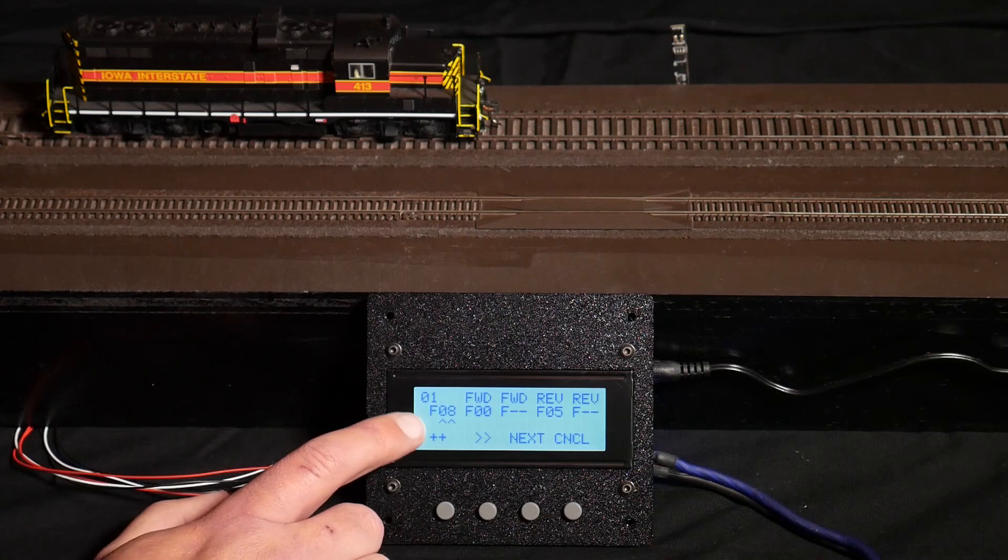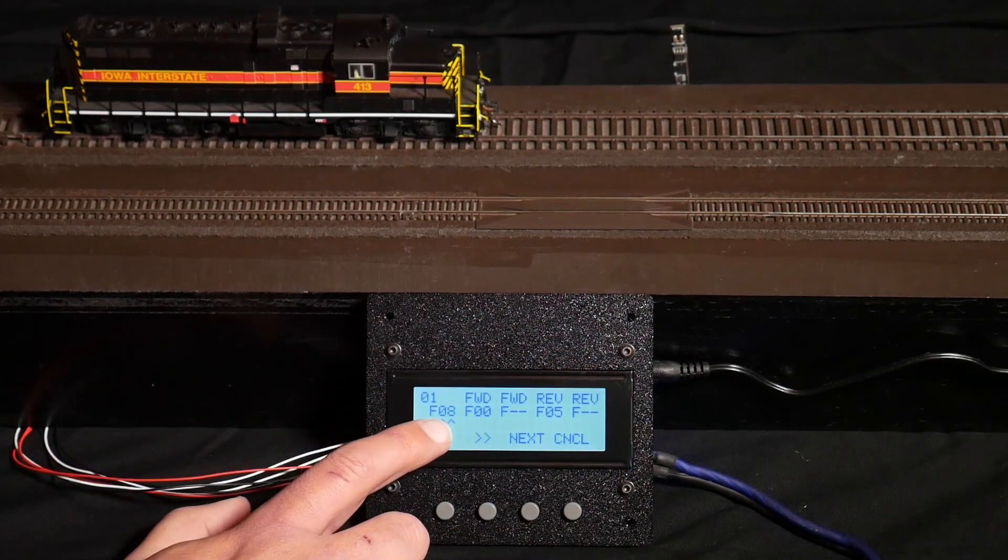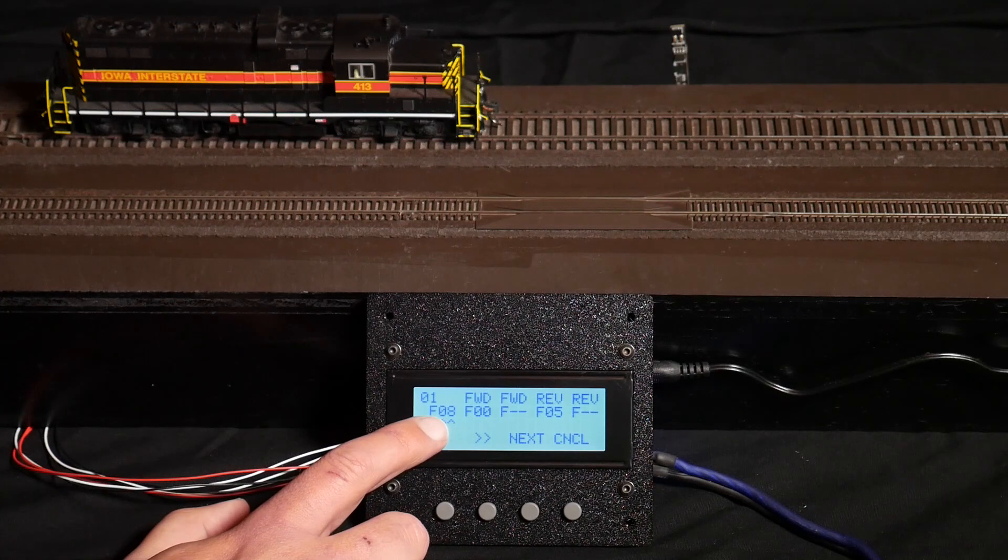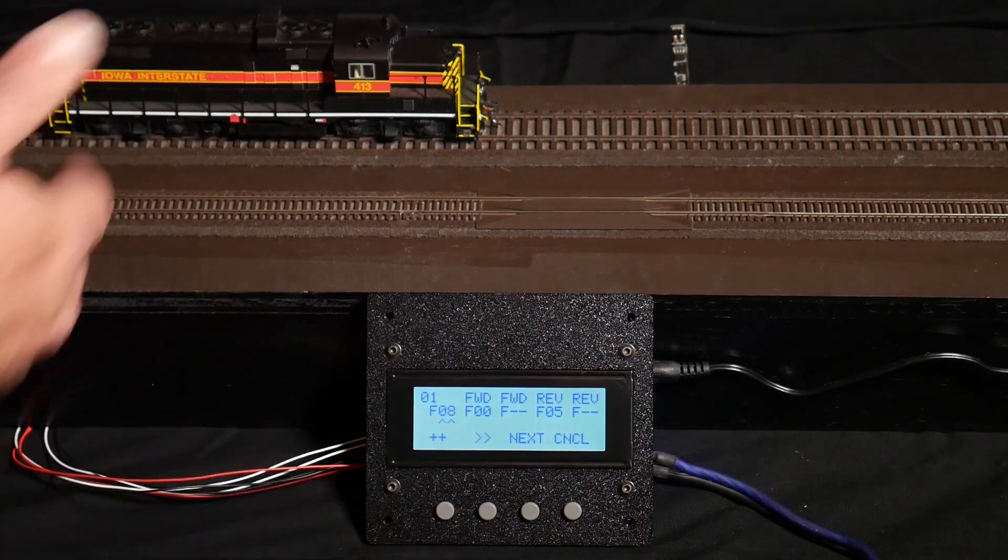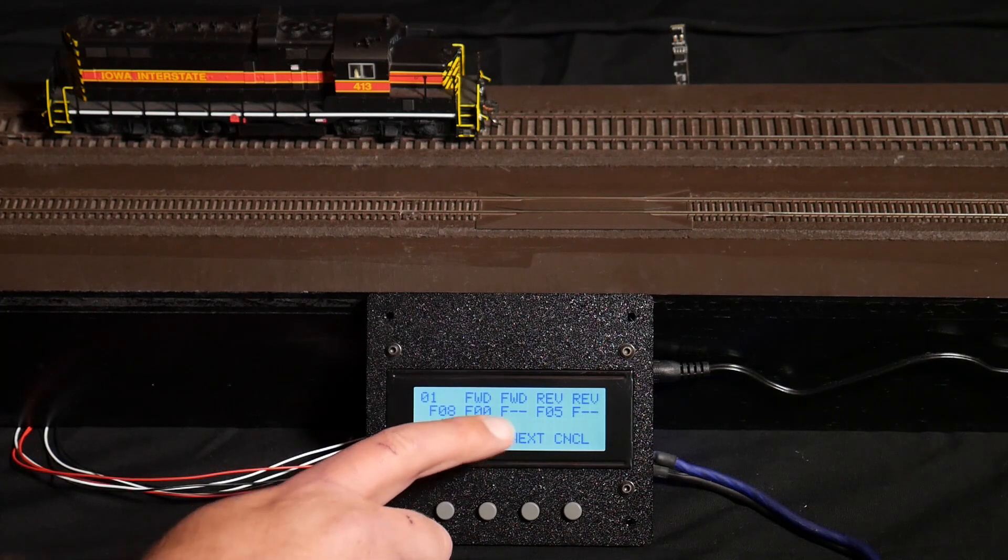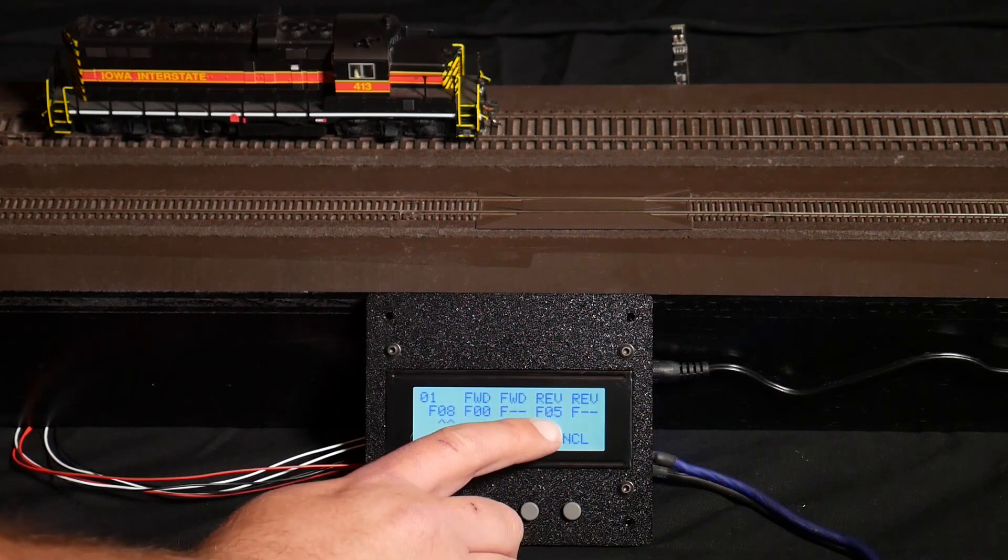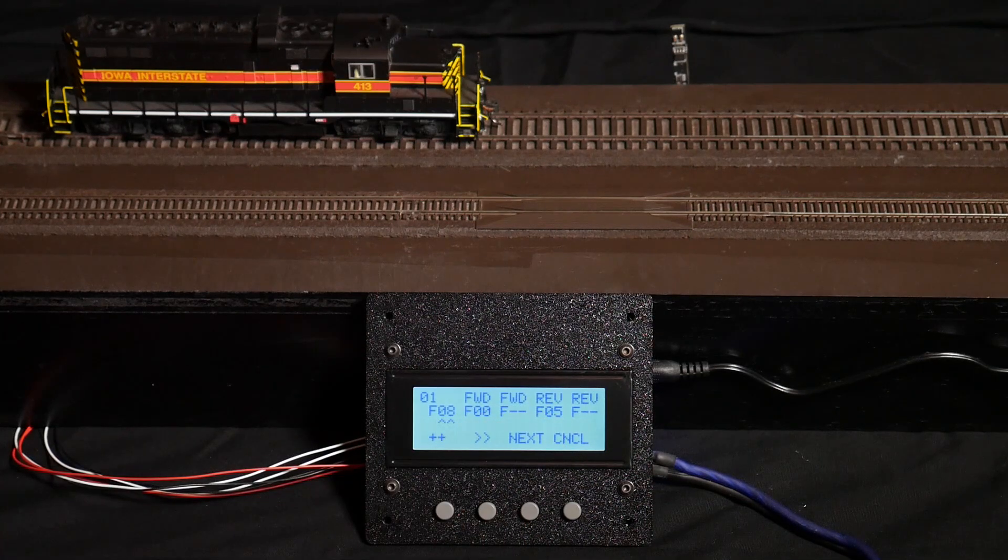Moving on to the next configuration screen, we can configure the functions that are active for that locomotive. So F8 would be on any time the locomotive is on. That actually is tied to our sound decoder in there to turn the engine sound on. Forward is tied to F0 to turn the front headlight on, and reverse is tied to F5 to turn the rear headlight on.